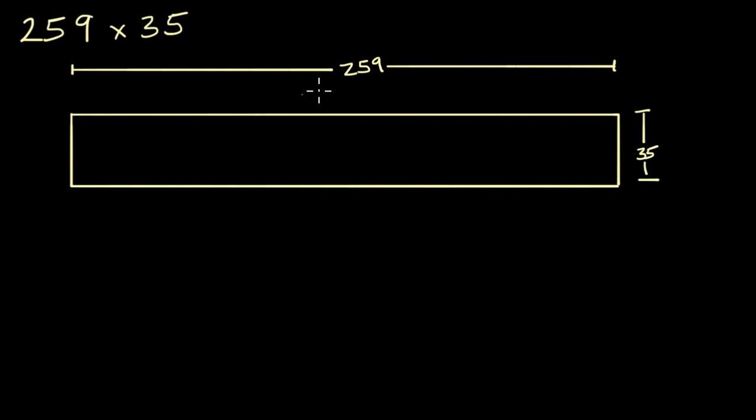What do I mean by that? Well, let's first imagine 200. So if this whole thing is 259, then maybe 200, and I'm not going to get it exactly right, but maybe 200 is going to be about that much of it right over there.